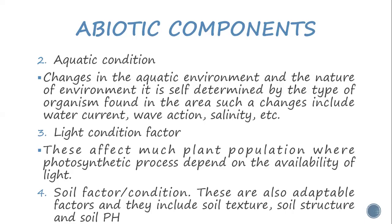The third one is the light condition factor. This affects much of the plant population. The light condition factor is where the photosynthetic process depends on the availability of light. The availability of light will also determine how the process of photosynthesis takes place, and in such a way it will also determine the population of the plants, which depend on the photosynthetic process to produce their own food.